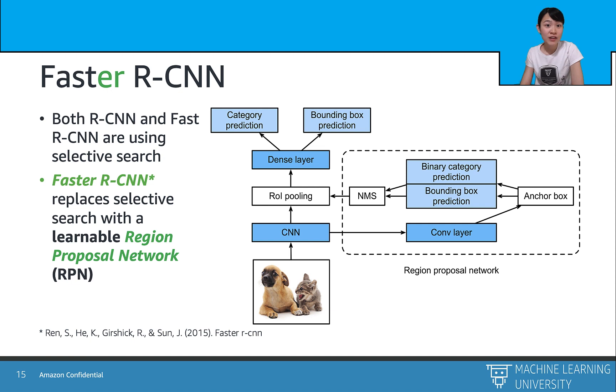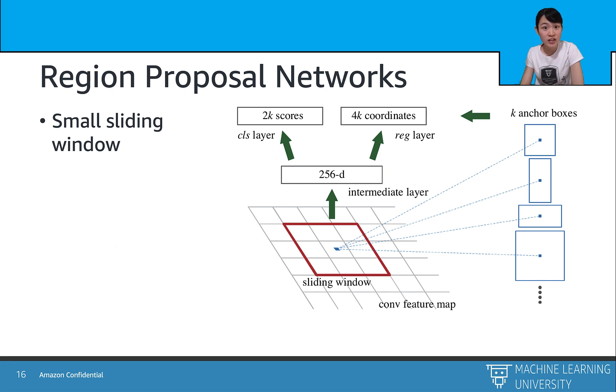Which is designed for image with a wide range of scales and aspect ratios. So it shares convolutional layers at test time, and the marginal cost for the computing proposal is small, such as 10 milliseconds per image. And to generate the region proposal, we slide a small network over the convolutional feature maps output by the last shared convolutional layer. And this small network takes as input an n by n spatial window of the input convolutional feature map.